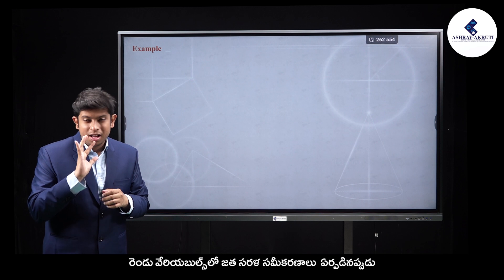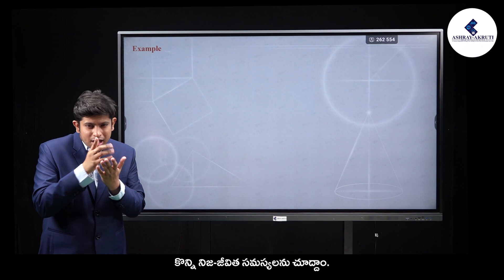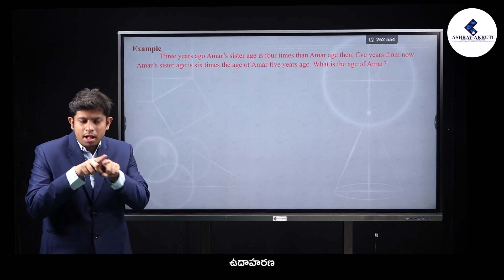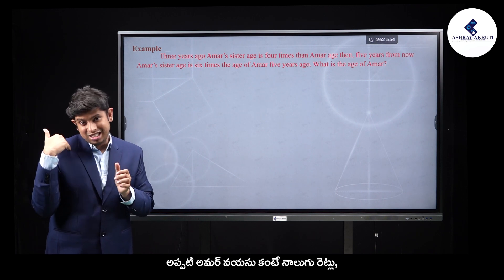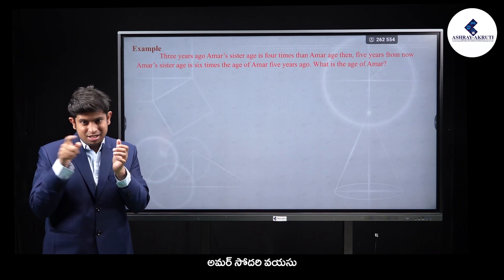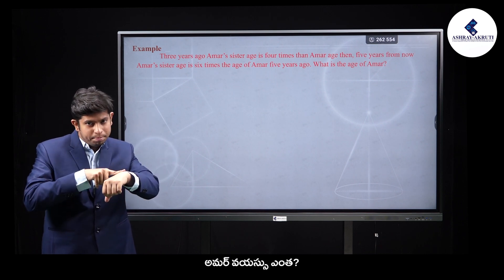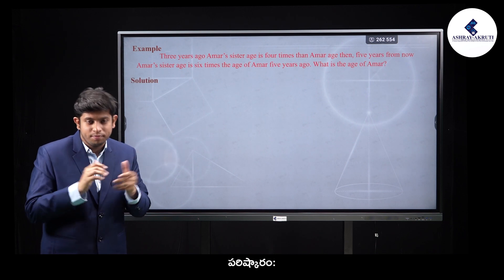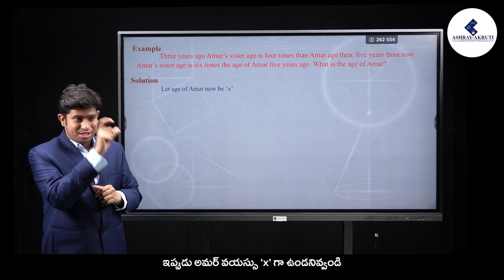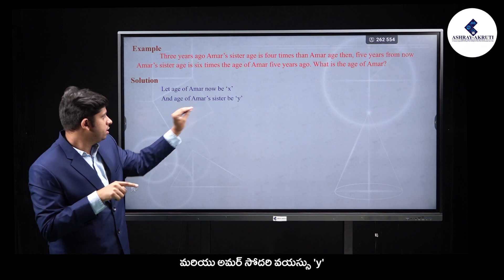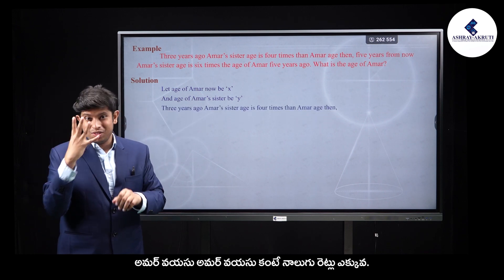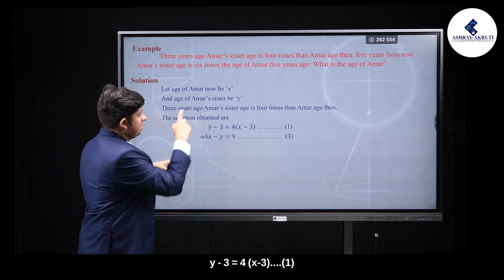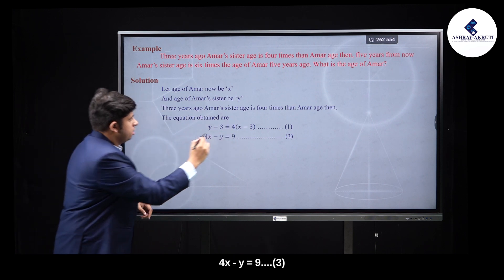Word problem: A person's age is 5 years more than twice the age of their sibling. Let the person's age be x and the sibling's age be y. After 5 years, the person will be 10 years older than the sibling, giving us: y minus 3 = 4, and 4x minus y = 9 as equation 3.